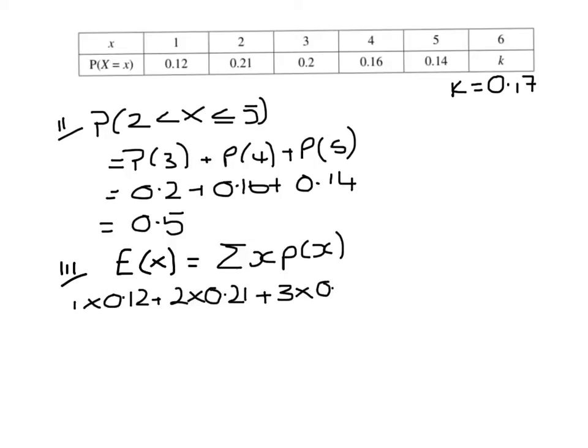3 times 0.2 plus 4 times 0.16 plus 5 times 0.14 plus 6 times 0.17, which is 3.5.